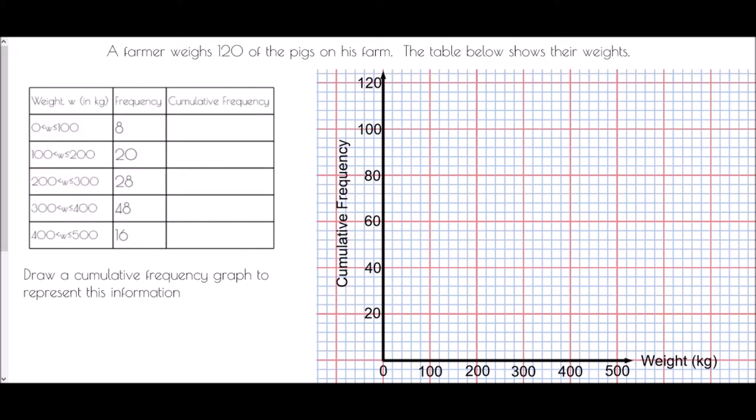In this question we've been told a farmer weighs 120 of the pigs on his farm and the table below shows their weights. The first thing to notice is that all the weights are in groups — this is a grouped frequency table, meaning a frequency of eight means there were just eight pigs between zero and 100 kilograms. We don't know anything exact about them, just that it was somewhere between zero and 100.